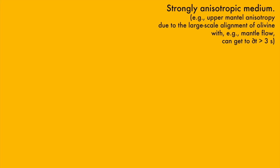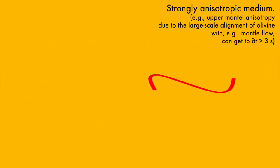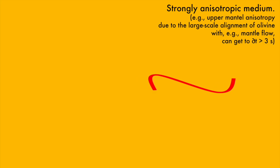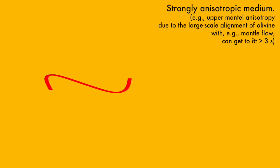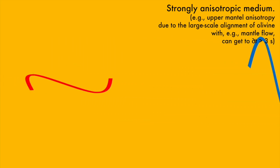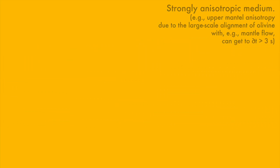Even stronger anisotropy here. The velocity difference between fast and slow shear wave is even larger. So if this were a scientific study — which it obviously is — then we would use that information to determine details like strength or the thickness of anisotropic layers. And unless they reached a discontinuity, they traveled happily ever after.